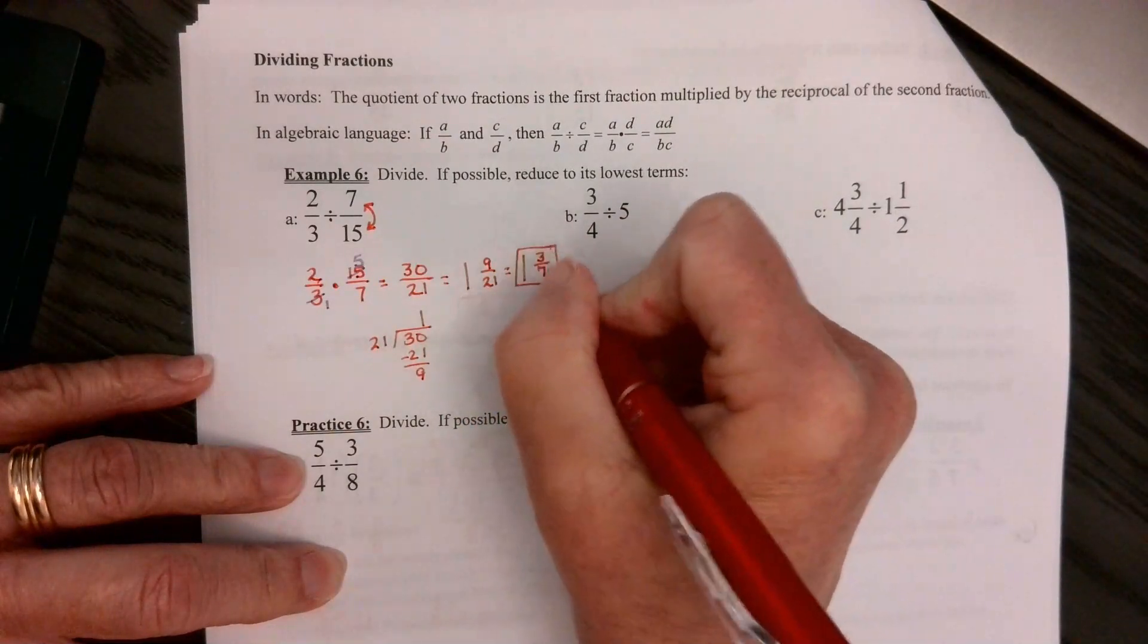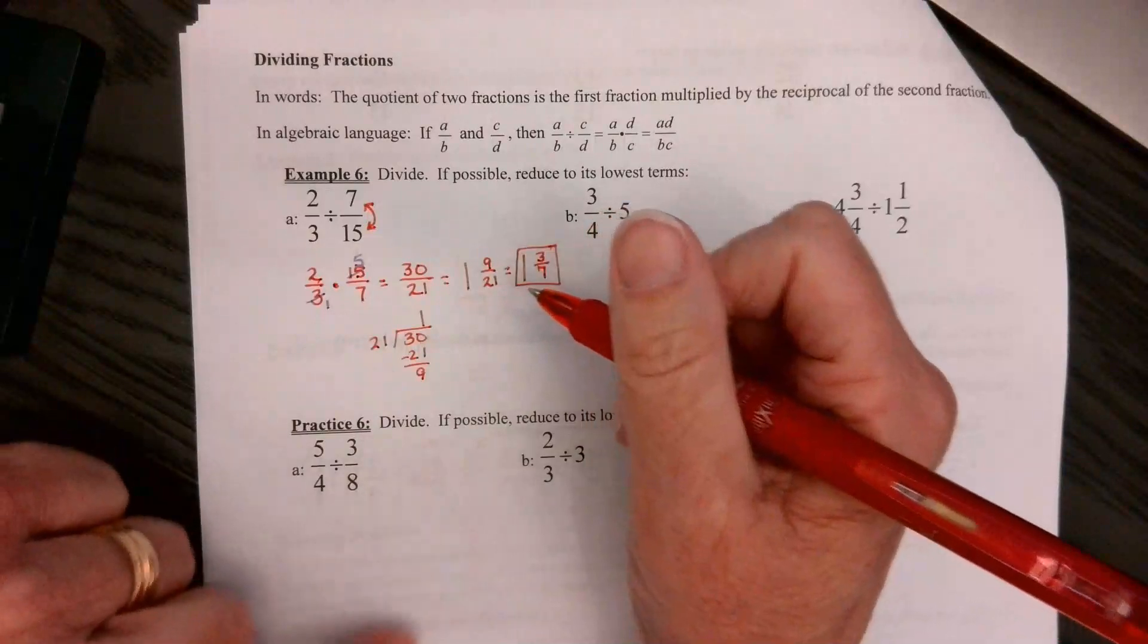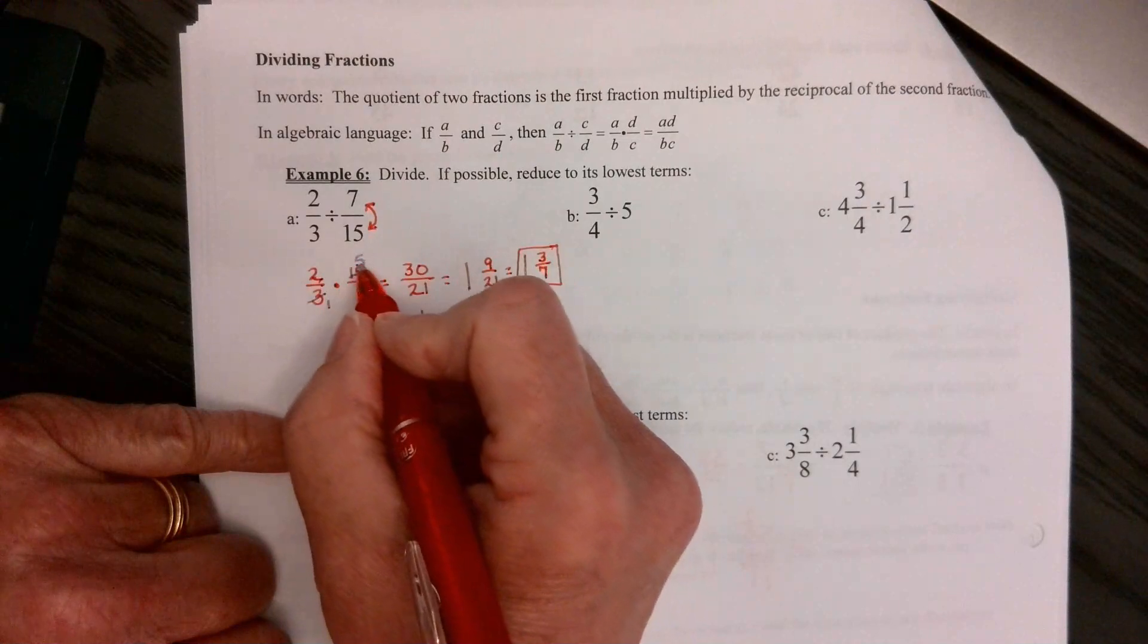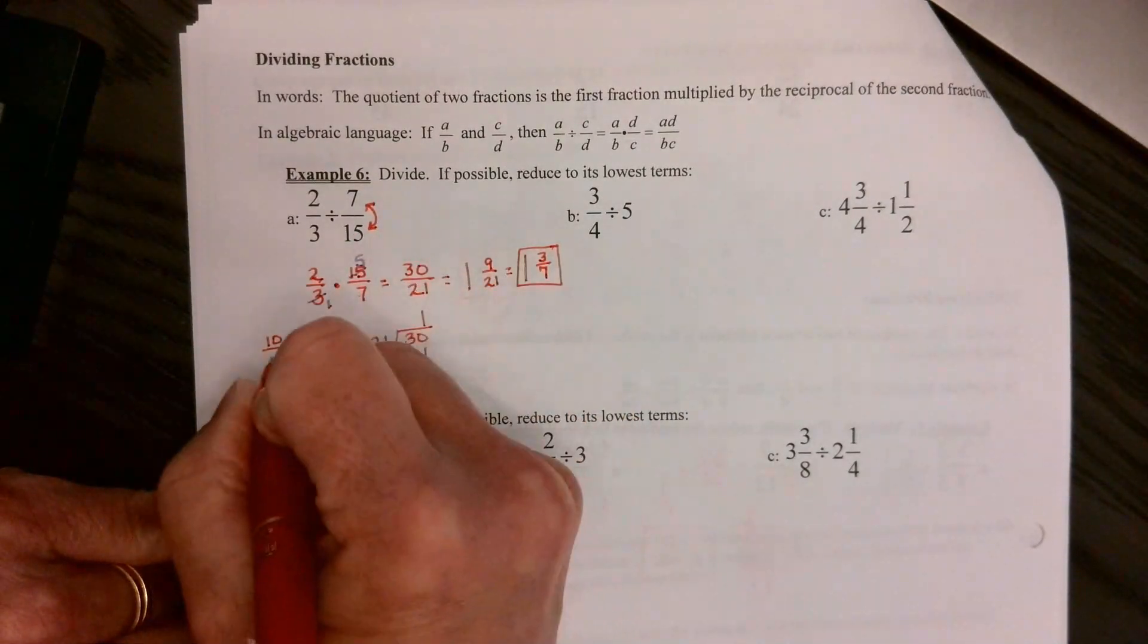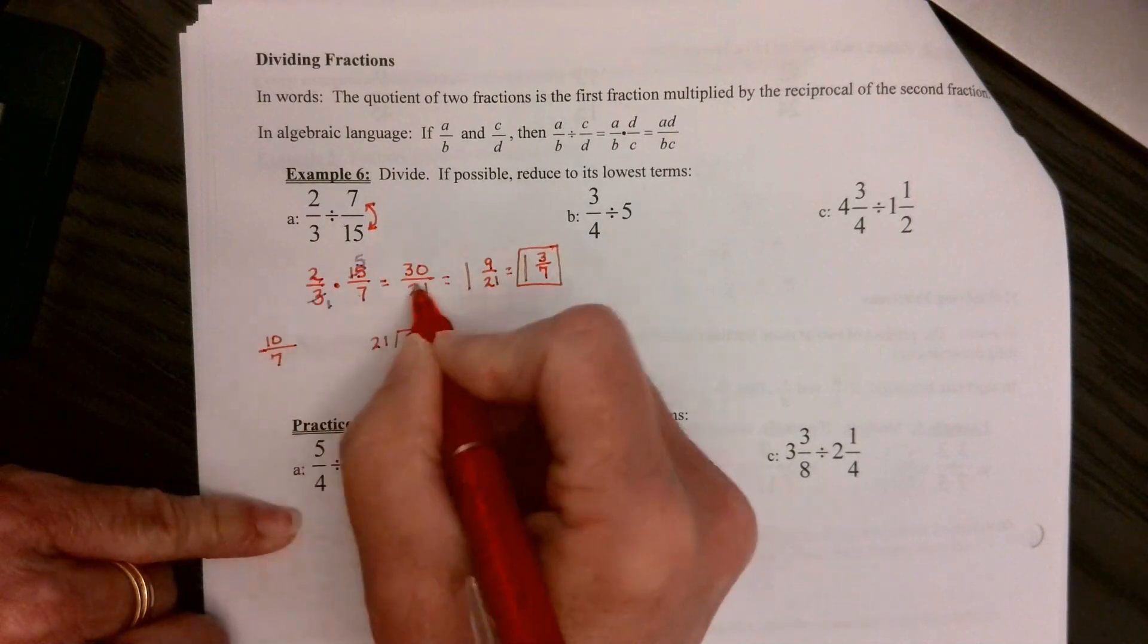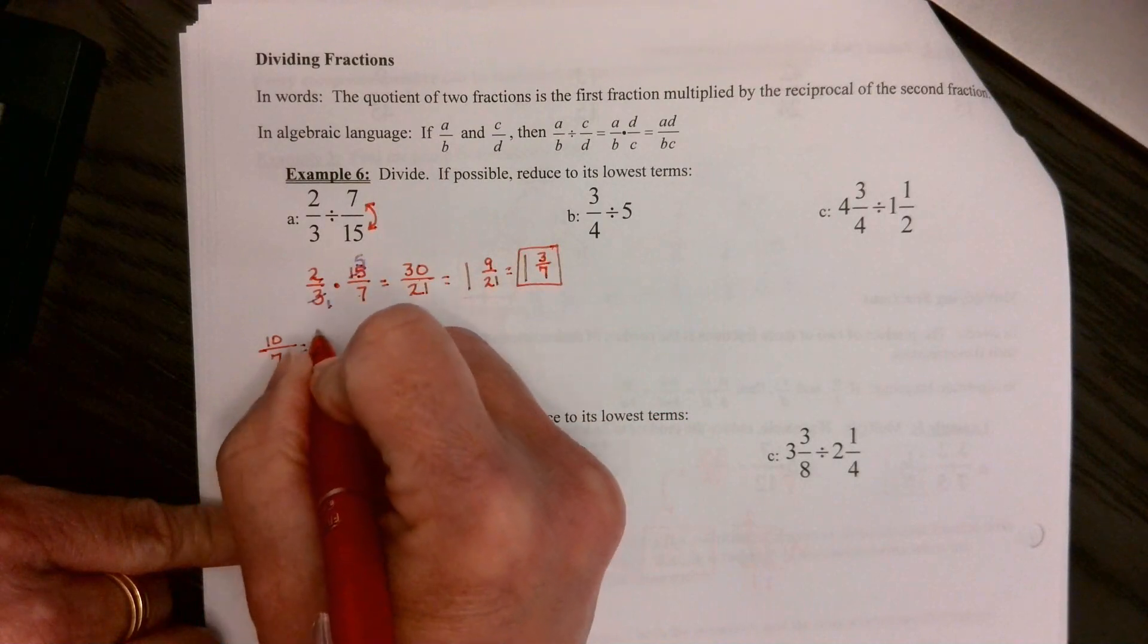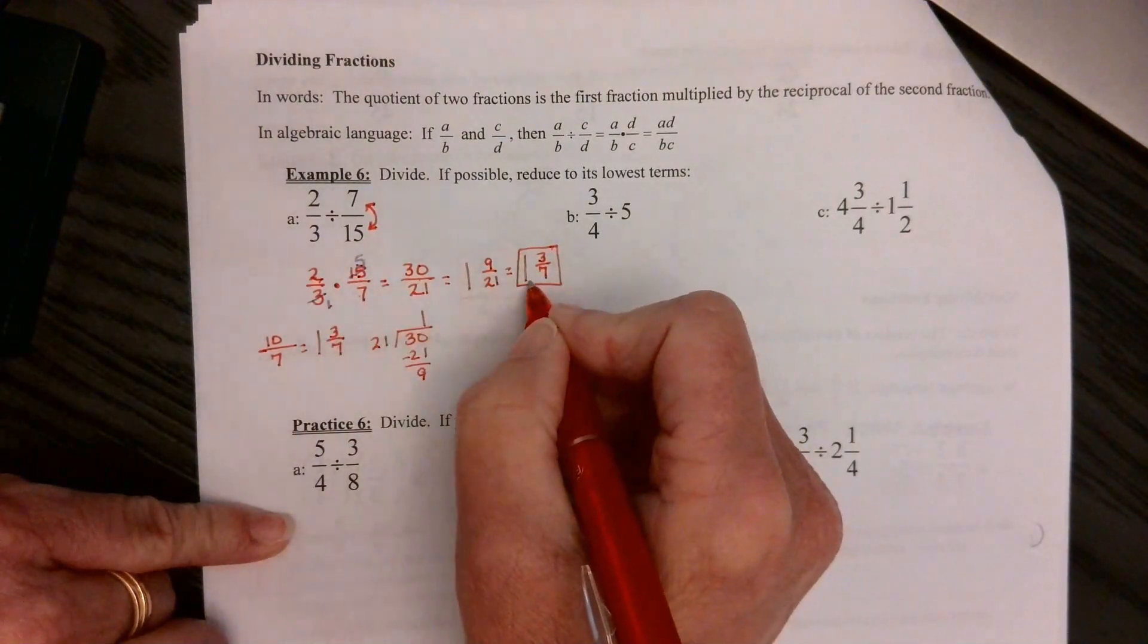Now, I caught that because I came over here and went, oh, I can reduce this by 3, both the top and the bottom. So if I had said 3 goes into 15 five times, I get 2 times 5 is 10. 1 times 7 is 7. Now, I'm not dealing with this big, long, bigger numbers. And 7 goes into 10 one time with 3 left over over 7, which is the same thing I got here.